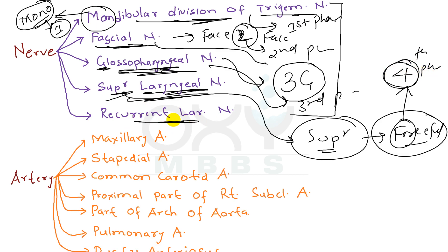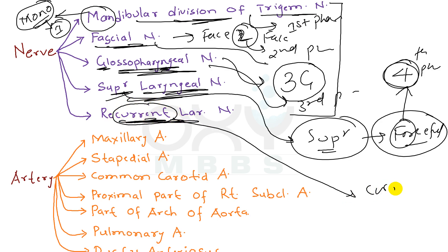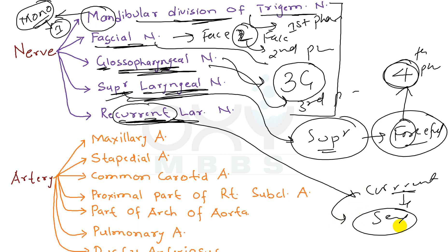Now coming to the recurrent laryngeal nerve. Take the word 'current' from 'recurrent' — and whenever you do 'sex,' current flows between two people. Here 'sex' means number 6. So the recurrent laryngeal nerve is derived from the sixth pharyngeal arch.